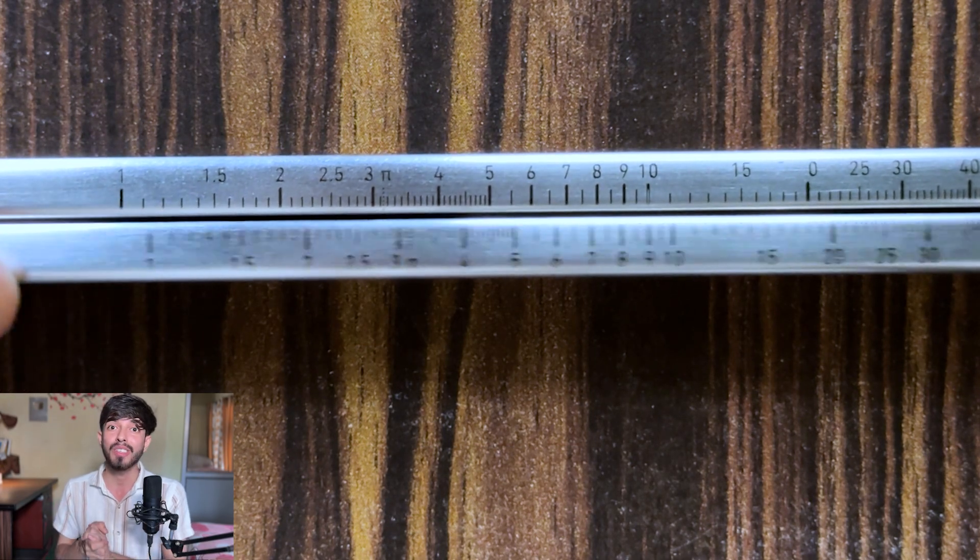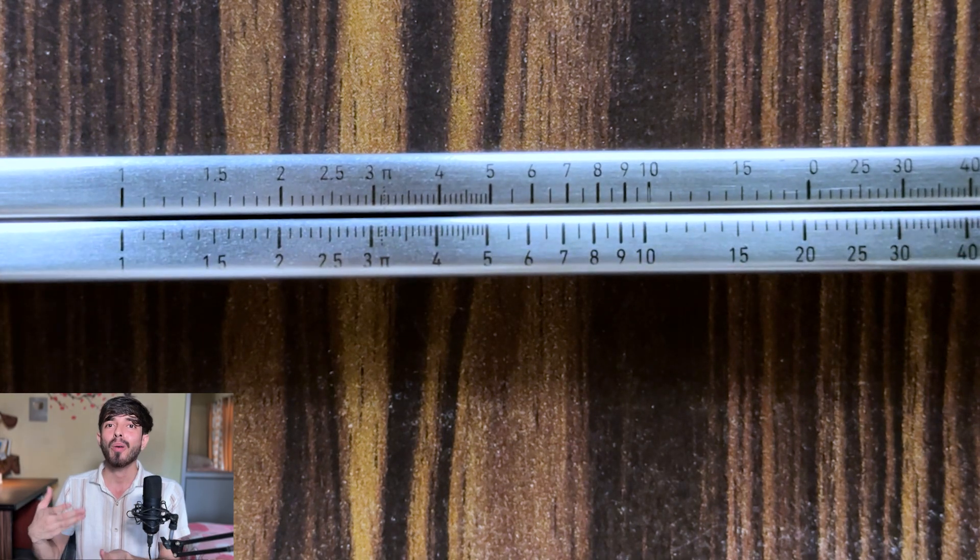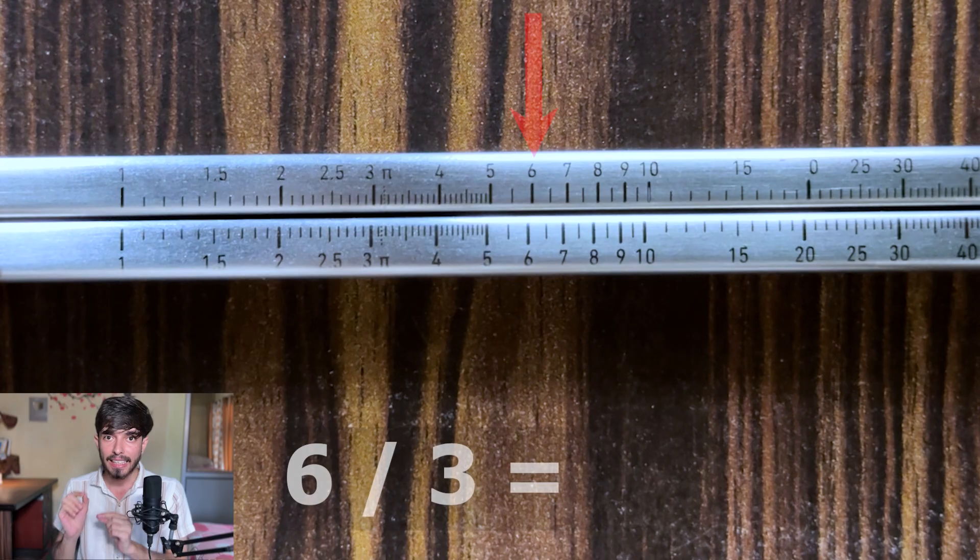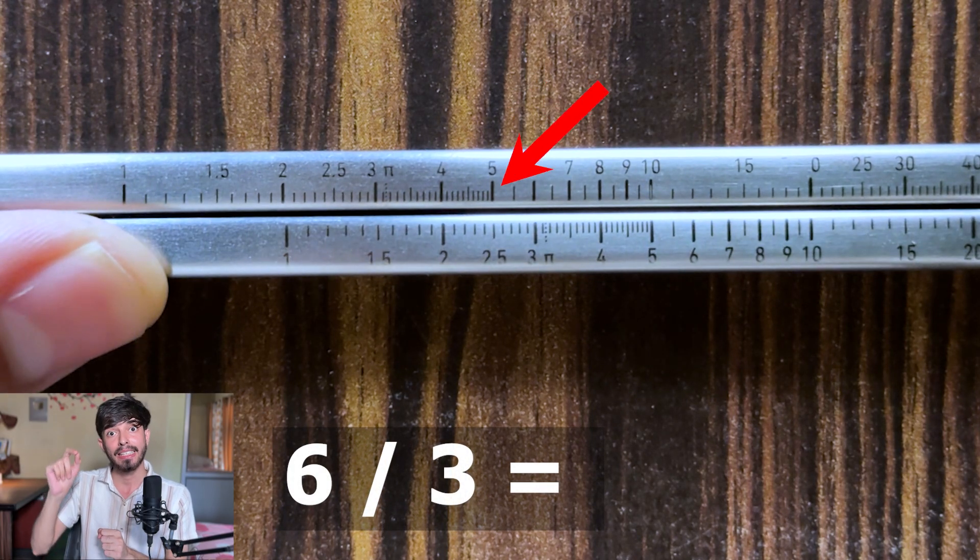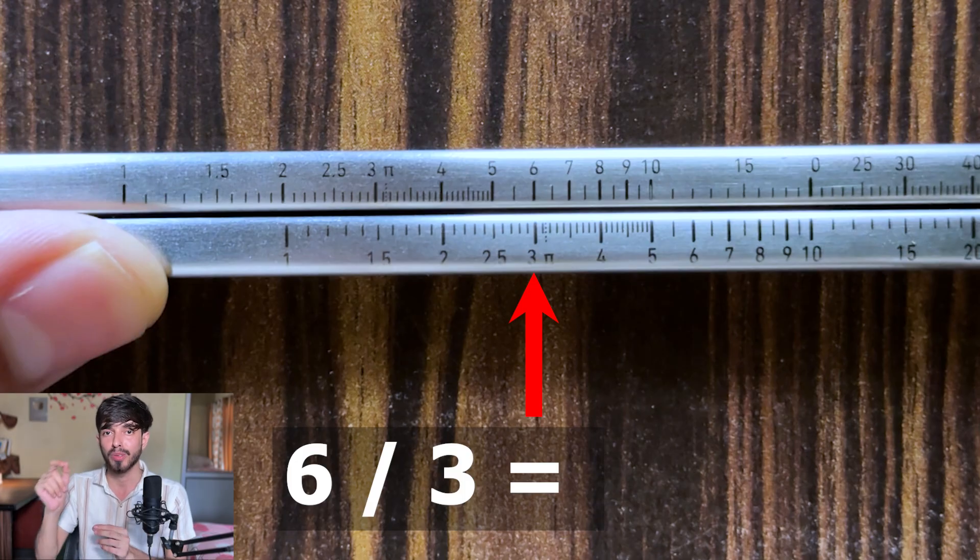Now can you think how will we do division on these? It is just the opposite of multiplication. Align the number you want to divide on the top chopstick by the number you want to divide by in the bottom chopstick. Now just look at the number above 1. That's the answer.